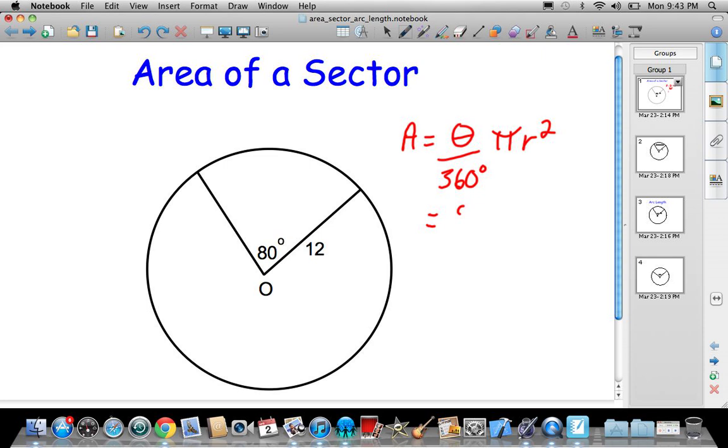We got 80 divided by 360 times 3.14 times 12 squared. If we do the math on that, we got 80 divided by 360 times 3.14 times 144, so we have an area of about 100.48, and I'll say that's centimeters squared. That's just the area of my sector. The biggest thing to remember is we just have some fraction of the area of the circle.